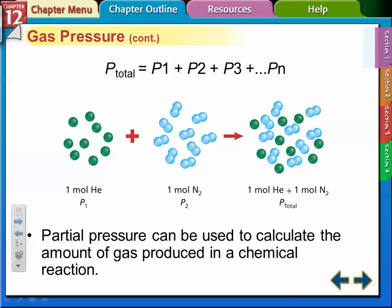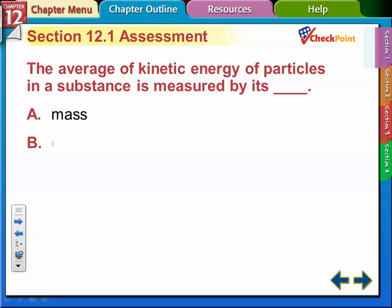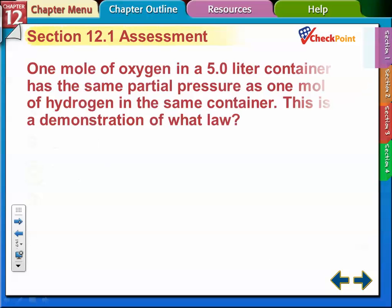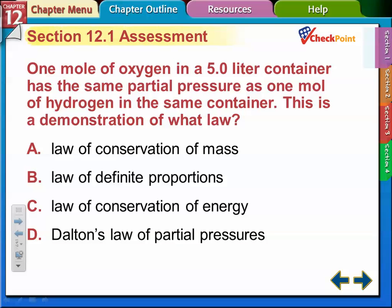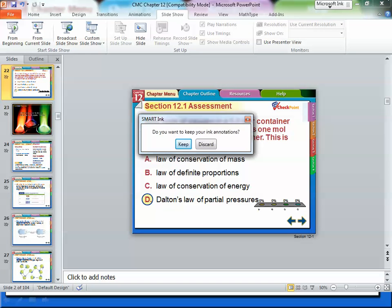We're going to use these later on, I think in the next chapter, to calculate the amount of gas produced in a chemical reaction. The average kinetic energy of particles in a substance is measured by its temperature—kinetic energy and temperature are the same thing. How fast it's moving determines the temperature. As one mole of hydrogen in the same container—this is a demonstration of Dalton's law of partial pressures. It doesn't matter which one it is; they have the same pressure if we have the same amount of stuff in the same container.